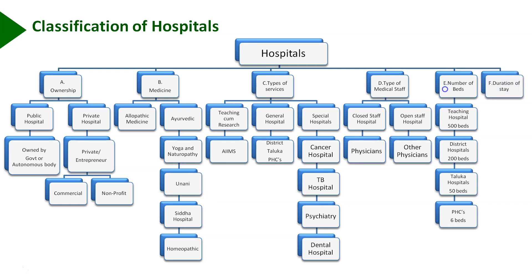Hospitals can also be classified according to duration of stay. Short stay hospitals are those where more than 90% of all patients admitted stay less than 30 days. Long stay hospitals are those where more than 90% of all patients admitted stay more than 30 days, which includes mental hospitals.